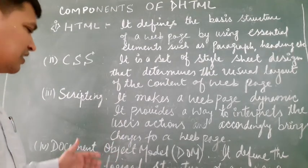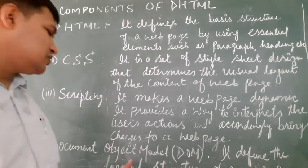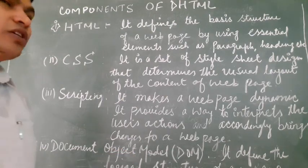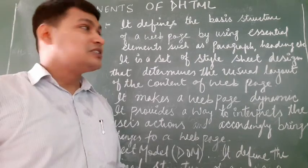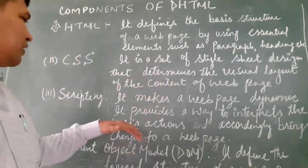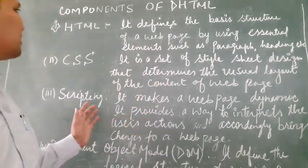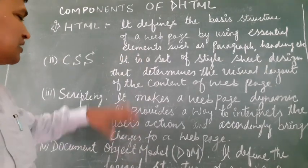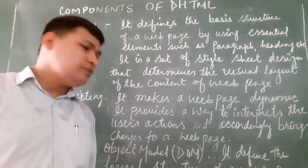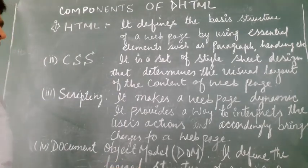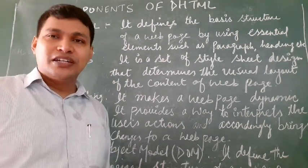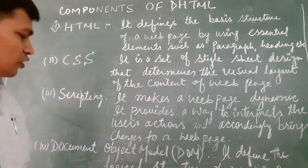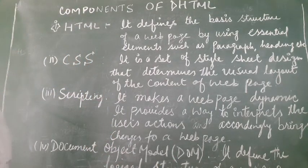The last component of DHTML is DOM, document object model. This is the logical structure. How CSS will coordinate with the scripting language, how HTML will coordinate with CSS and scripting language—all this coordination is done by the help of DOM. It defines the logical structure of your web page, so it is also important for the DHTML document.